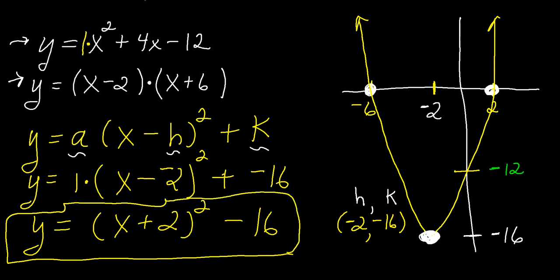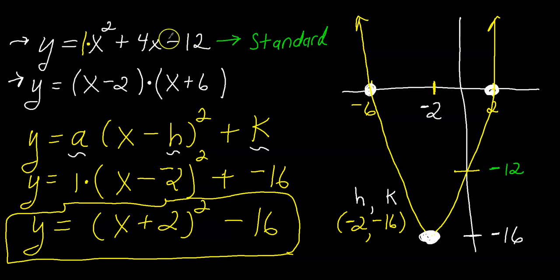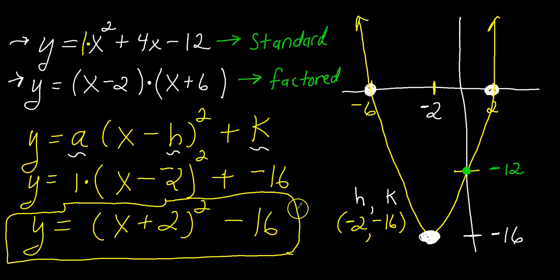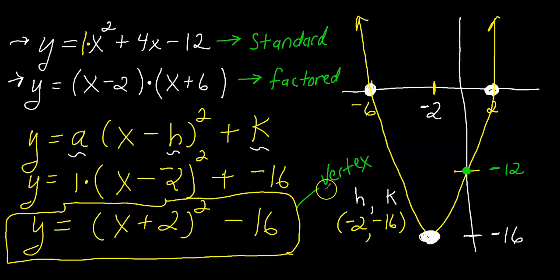So there are three big forms you need to know. Standard form tells you the y-intercept — the constant at the end of the equation. Factored form lets you find the x-intercepts directly. And vertex form lets you identify the coordinates of the vertex. Thanks for watching, have a great day.